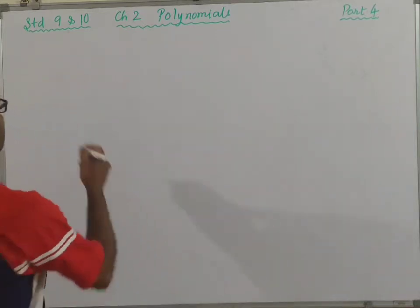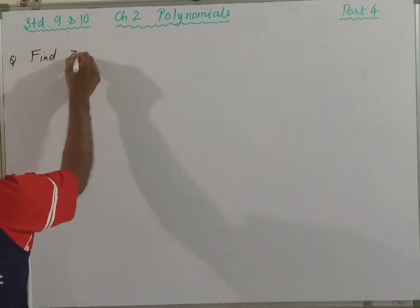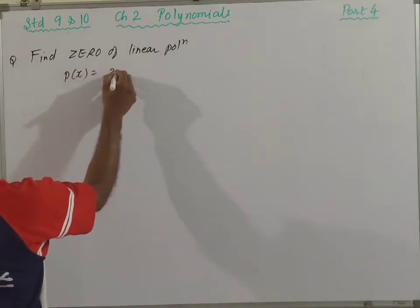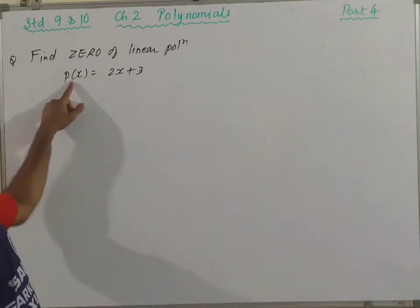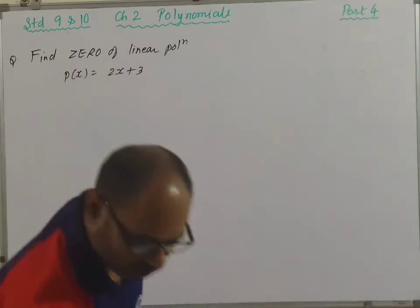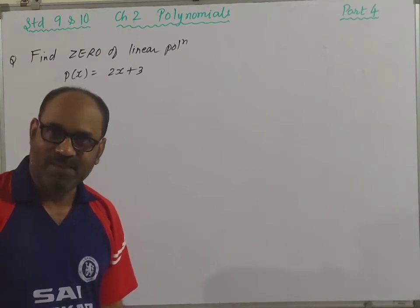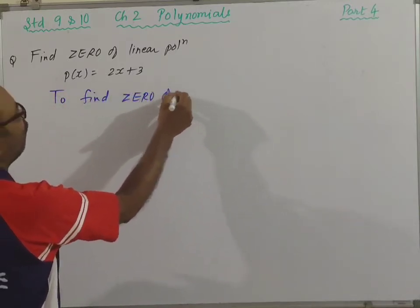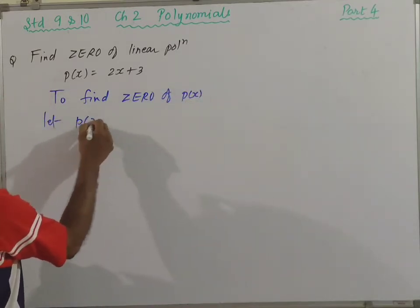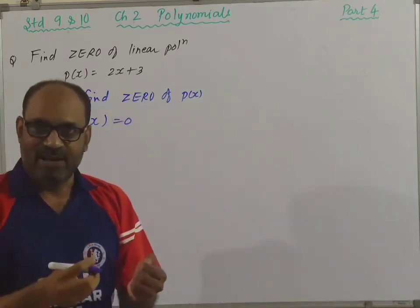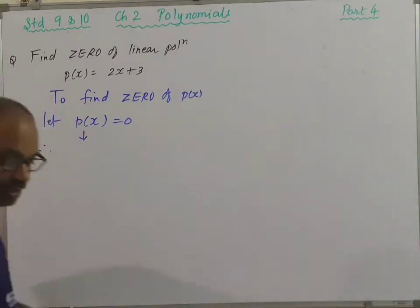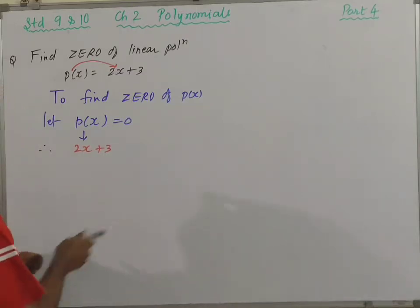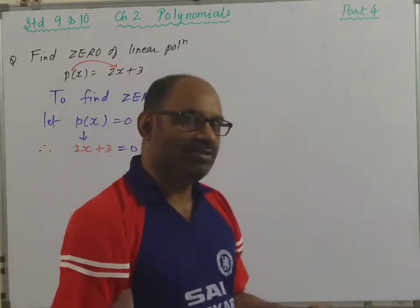Let's see the question: find the zero of linear polynomial p(x) = 2x + 3. Here is a linear polynomial 2x + 3, the degree is 1, and we have to find the zero of this polynomial. To find the zero of this polynomial, let p(x) be equal to zero. Therefore, substituting p(x): 2x + 3 = 0. You have got a linear equation now.